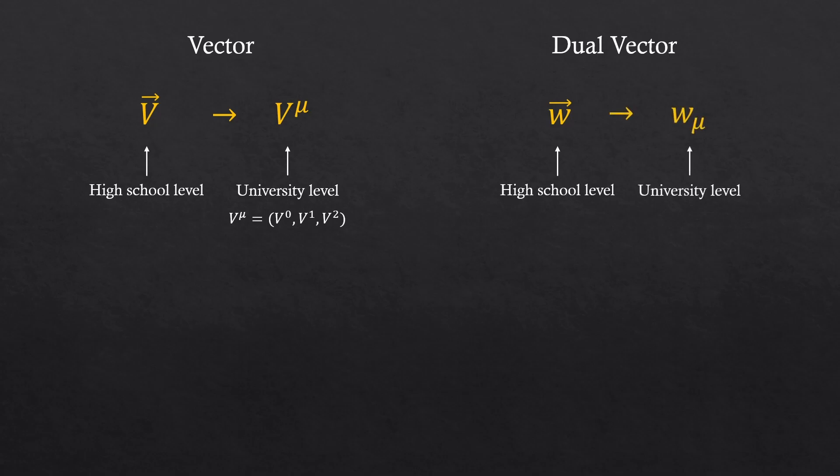Index mu is a position of the element. Also, for the dual vector, we are going to use this. Do you see another difference? We use a subscript mu instead of the superscript for the dual vector. This is another important rule, so remember that.